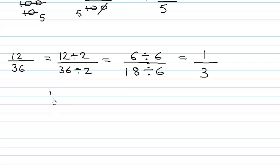We could also do this directly: 12 times 1 is 12, and 12 times 3 is 36. So 1 over 3 is the reduced form of 12 over 36.